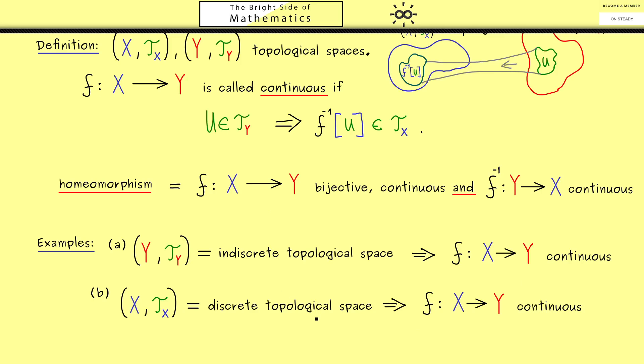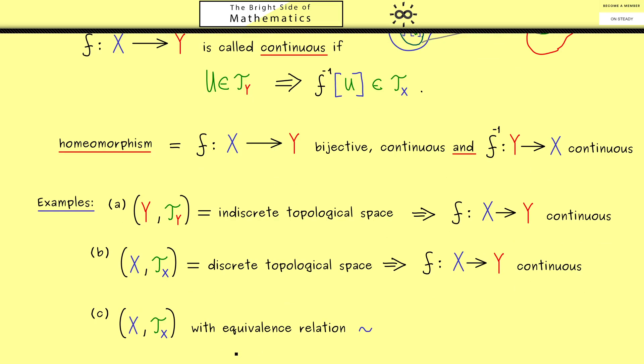Okay, then the last example I want to show you is also one we've already discussed. There we just take any topological space (X,Tx) and an equivalence relation ~. Hence the topological space Y should be given by the quotient topology.